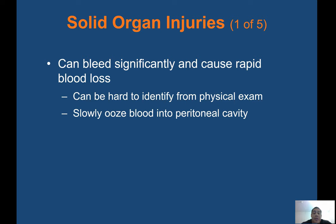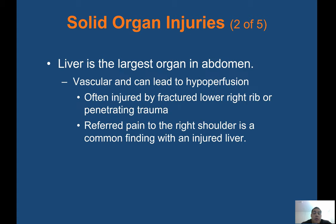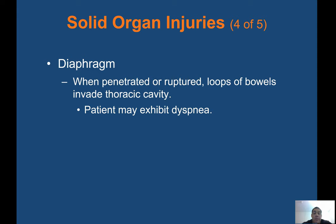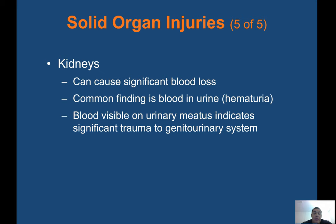Solid organ injuries can bleed significantly and cause rapid blood loss. They can be hard to identify from a physical exam, as they can slowly ooze blood into the peritoneal cavity. The liver is the largest organ in the abdomen — highly vascular and can lead to hypoperfusion. Often injured by fractured lower right rib or penetrating trauma. Referred pain to the right shoulder is a common finding with an injured liver. The spleen and pancreas are vascular and prone to heavy bleeding. The spleen is often injured in motor vehicle collisions, steering wheel trauma, falls, and bicycle or motorcycle accidents. Diaphragm rupture allows loops of bowel to invade the thoracic cavity, causing dyspnea. Kidney injuries can cause significant blood loss; a common finding is blood in the urine — hematuria. Blood visible in urinary output indicates significant trauma to the genitourinary system.